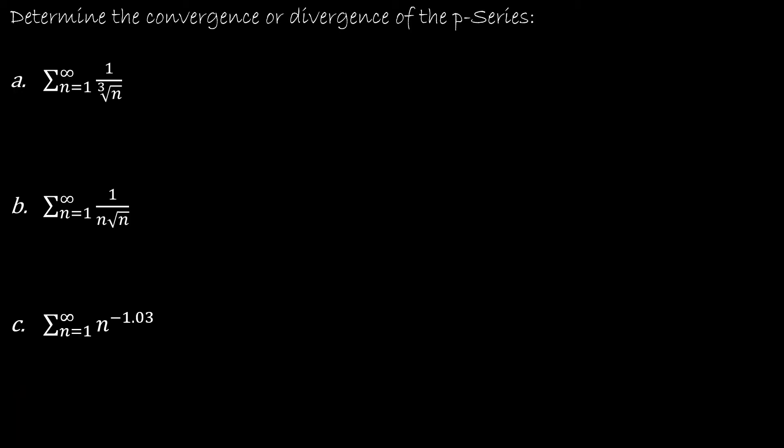Let's take a look at three examples. This is a very easy test. Remember, what we're looking for is if the p value is greater than 1, then it converges. And if it's between 0 and 1 inclusive, it diverges.